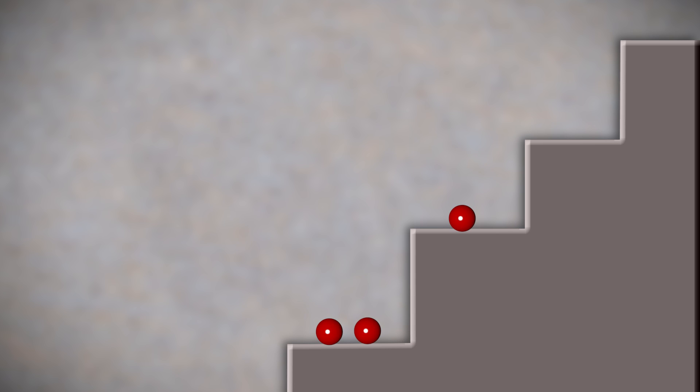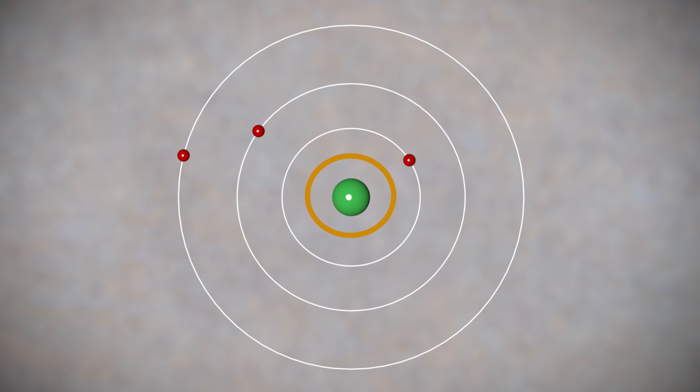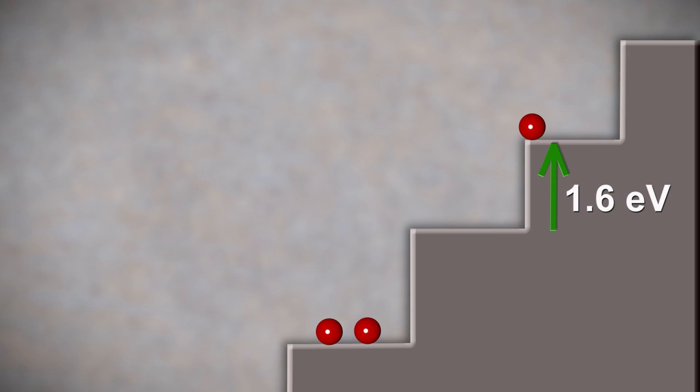Now what happens when a red photon enters into this? Red photon carries an energy of 1.6 electron volts. If this energy corresponds to that of this step, the electron here will swallow this photon and jump to next step and the photon vanishes. The photon is absorbed by the atom. Nucleus doesn't like this.